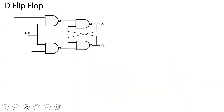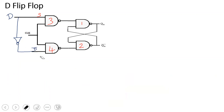Now, let's look at the details. I have taken an SR flip-flop here. The circuit has gate 1, gate 2, gate 3, and gate 4. This becomes the D flip-flop with two inputs: S and R — Set and Reset.